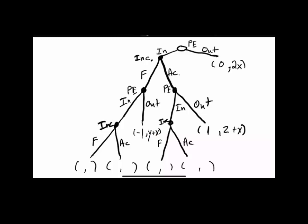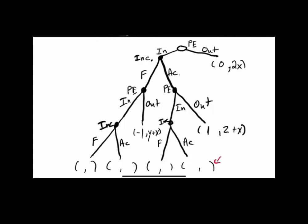Now let's go to the bottom right. When the potential entrant enters and the incumbent accommodates twice — potential entrant in, incumbent accommodates; potential entrant in, incumbent accommodates — the potential entrant gets a dollar each time, so that's one plus one or two. The incumbent earns Z each period when the entrant is in and they've chosen accommodate, so that's 2Z. The payouts here are two for the potential entrant and 2Z for the incumbent.